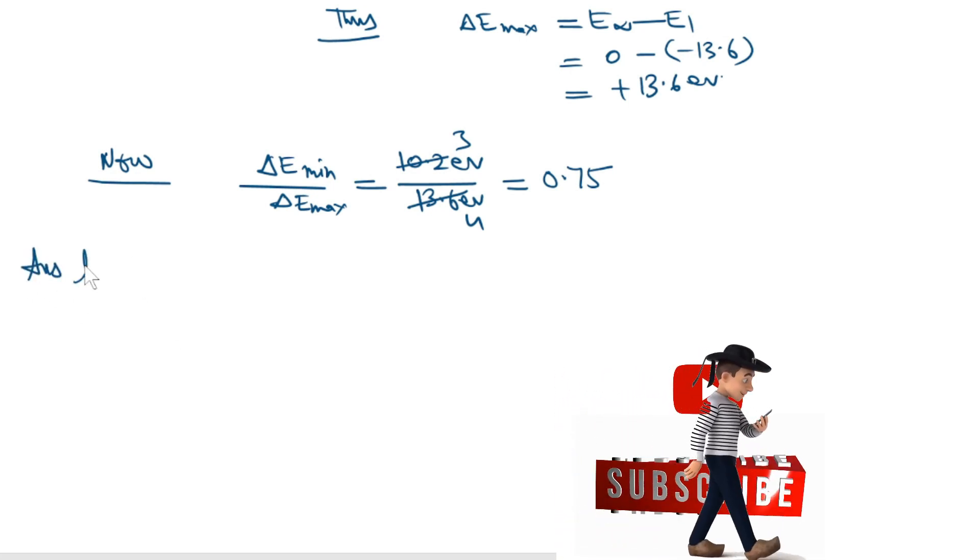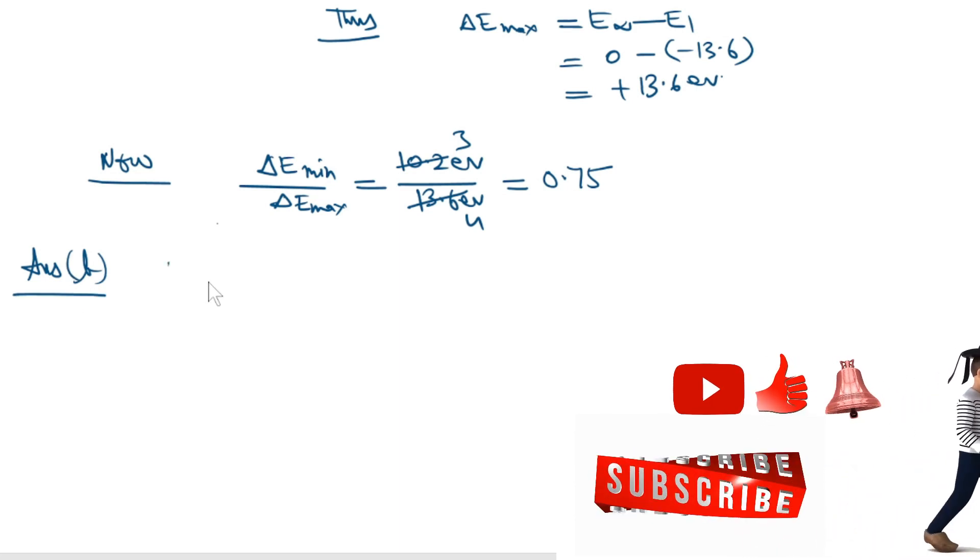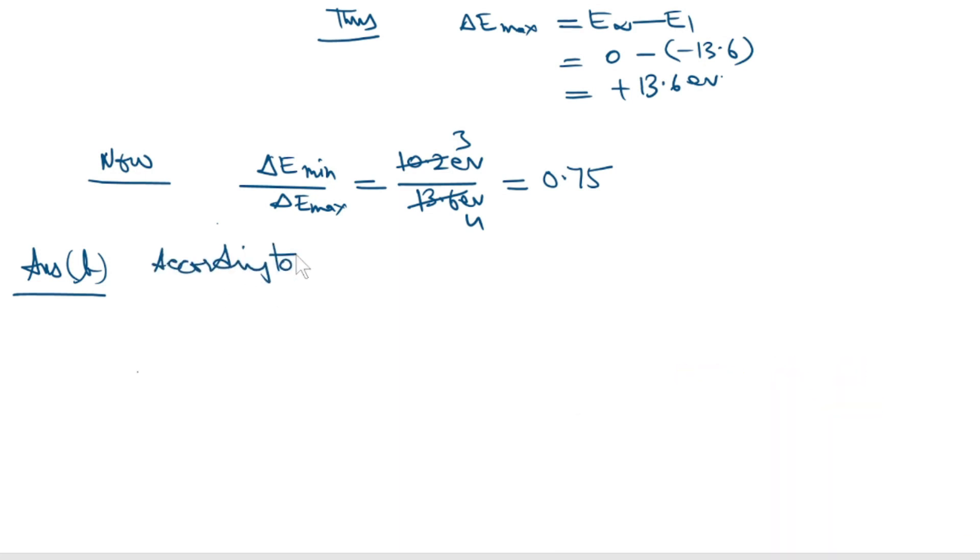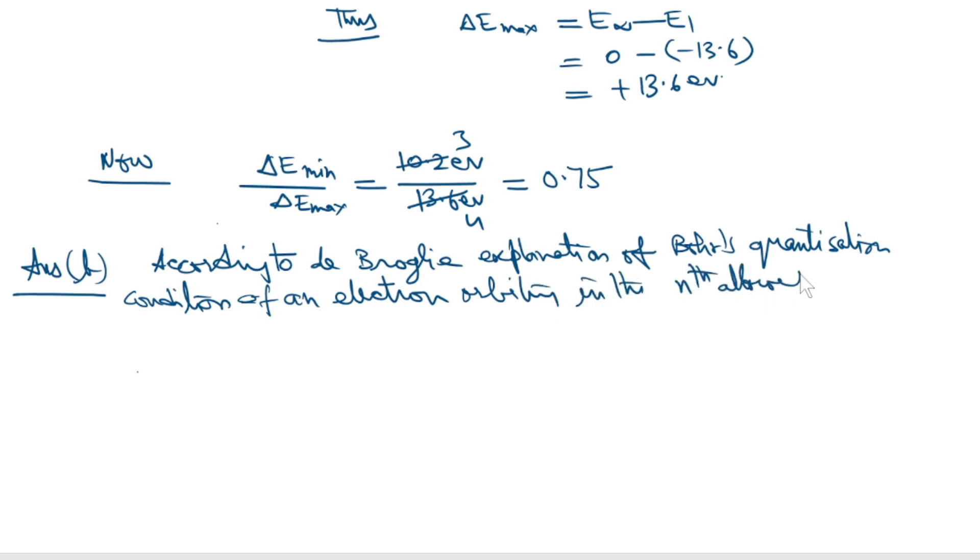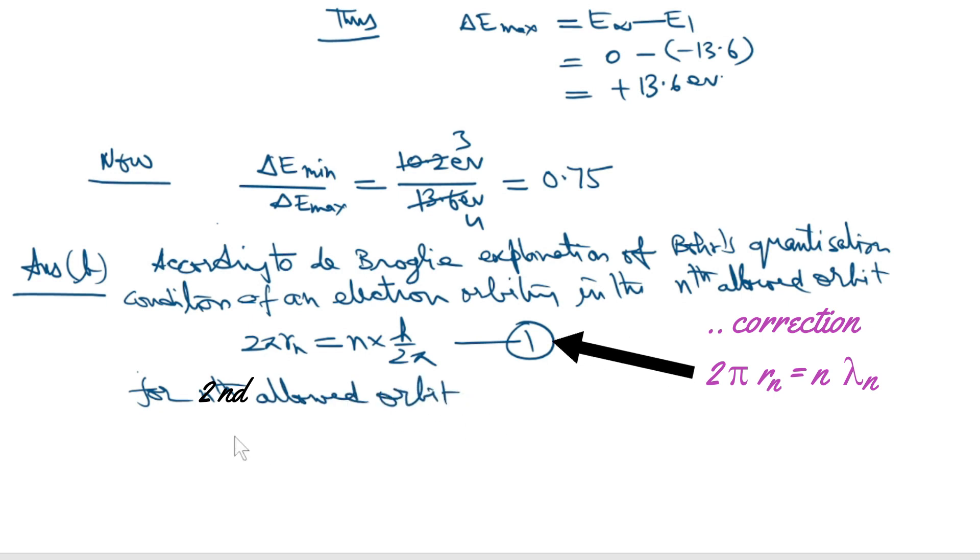Answer part B. According to de Broglie's explanation of Bohr's quantization condition of an orbiting electron, 2 pi Rn equals N times H by 2 pi. For the second allowed orbit, 2 pi R2 equals 2 multiplied by H by 2 pi. The particle wave in n equals 2 should look like this. This is the nucleus.